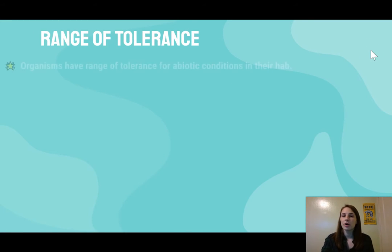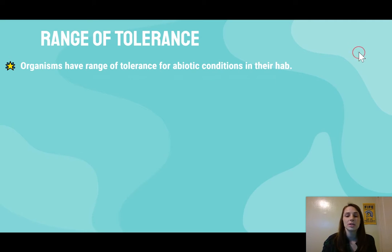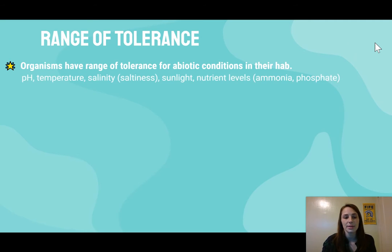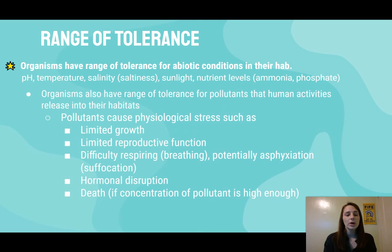Range of tolerance — we've talked about this at least a couple of times this year — is the fact that organisms have a range of tolerance for abiotic conditions in their habitat. This could be pH, temperature, salinity, sunlight, or nutrient levels. But organisms also have a range of tolerance for pollutants that human activities release into habitats.